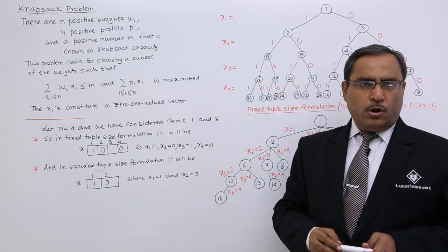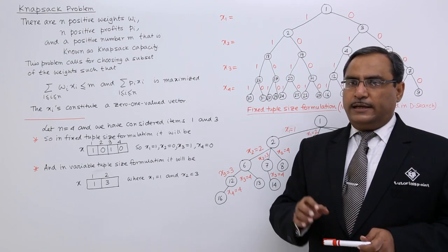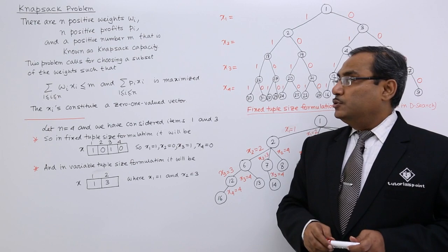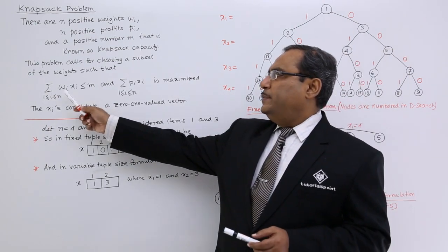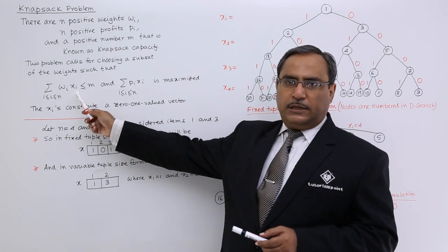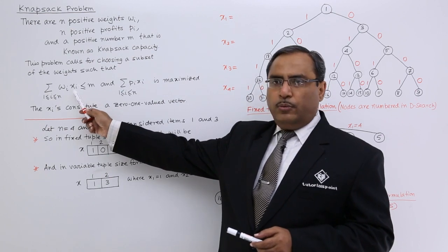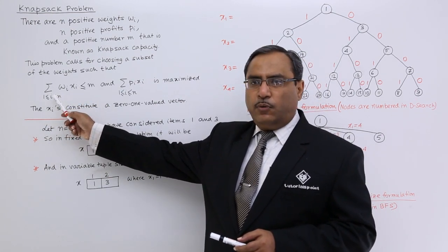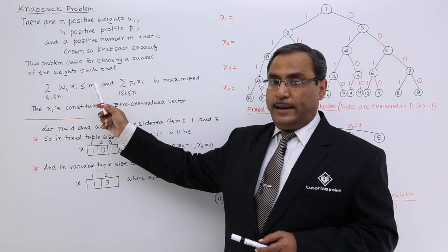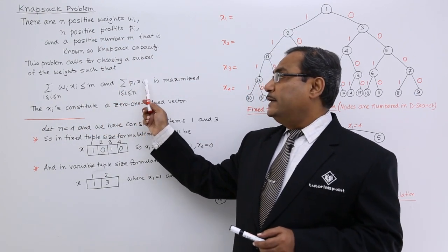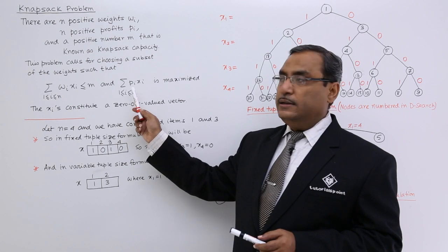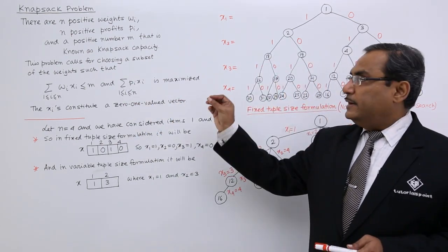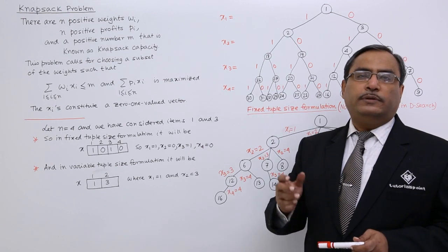Either x_i will be 0 or x_i will be 1 — that means either an item has been considered or it has not been considered. In this way the weights will be multiplied with the respective x value, whether it is 0 or 1, and their sum from i=1 to n must be less than or equal to m, and the profit sum is maximized. That is our Knapsack problem and we are going to solve this one.